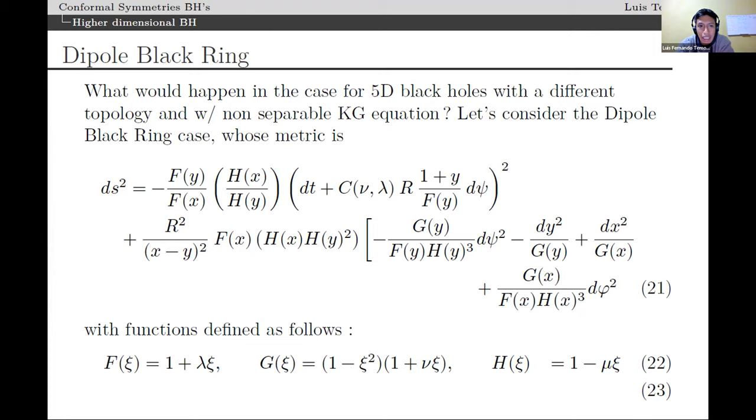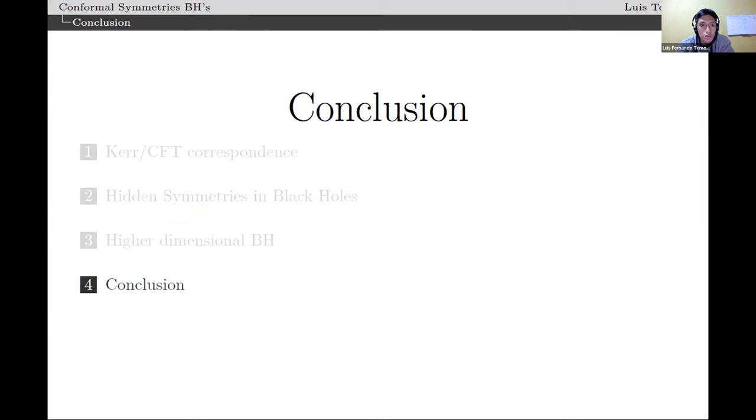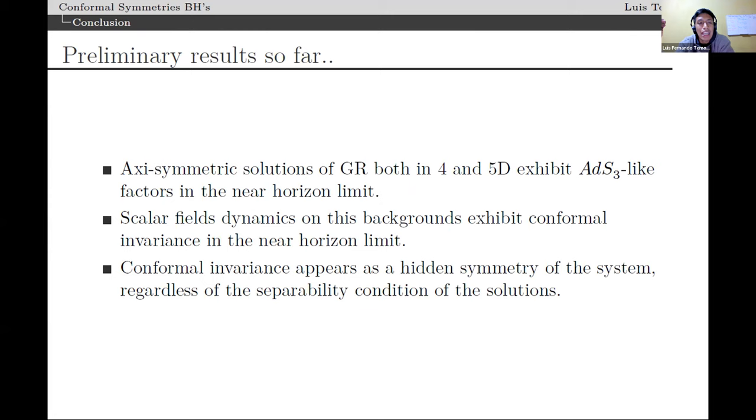What we have found for instance in the case of the so-called dipole black ring, a metric in this case, is that indeed it is possible. So by doing so far the Klein-Gordon equation analysis of the dipole black ring case, we have been able to recover as well a conformal dual of it.